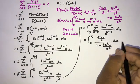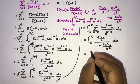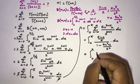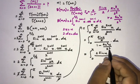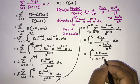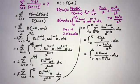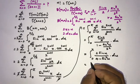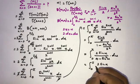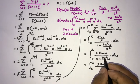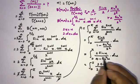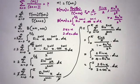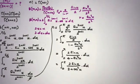Simplifying: the 2 squared is 4, a factor of 2 cancels, and we get the integral from 0 to pi of 2 sine(u) over 4 minus sine squared(u), du. Substituting sine squared equals 1 minus cosine squared gives: integral from 0 to pi of 2 sine(u) over 3 plus cosine squared(u), du.